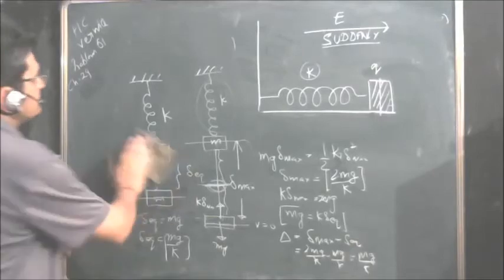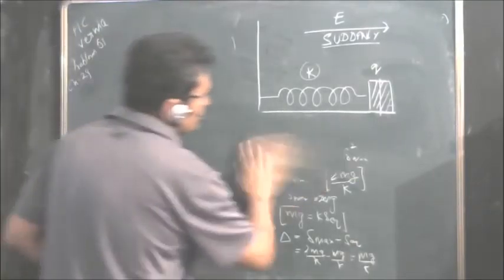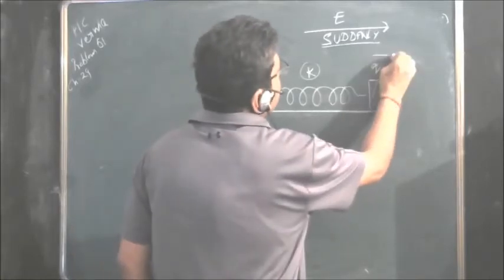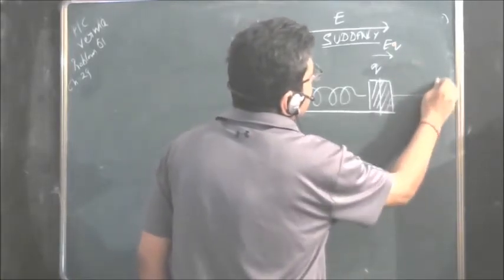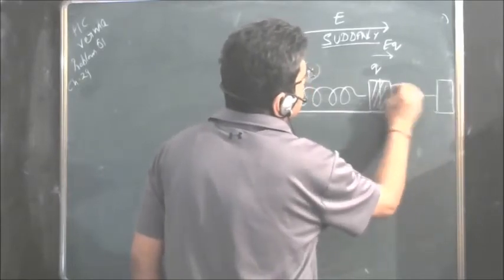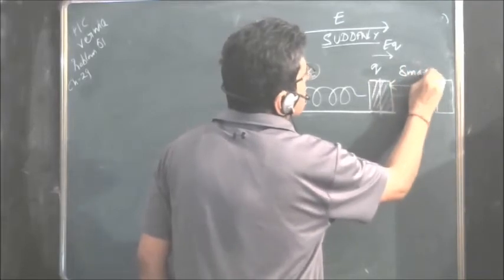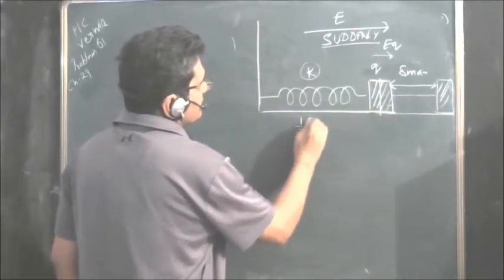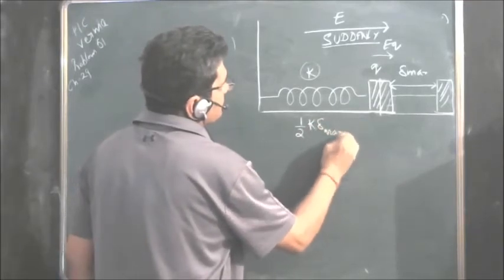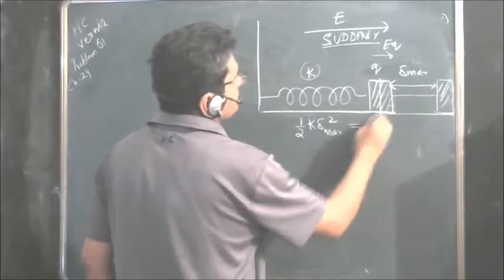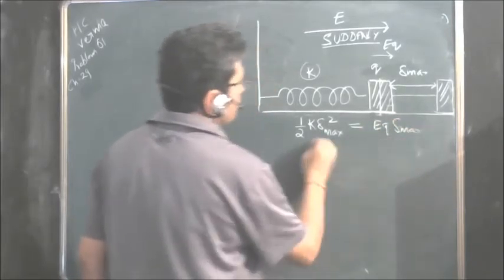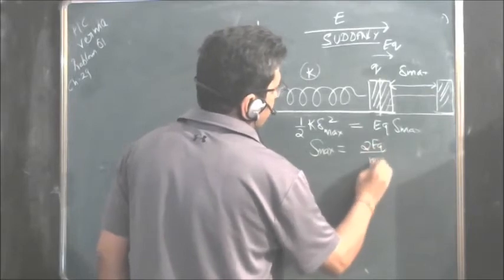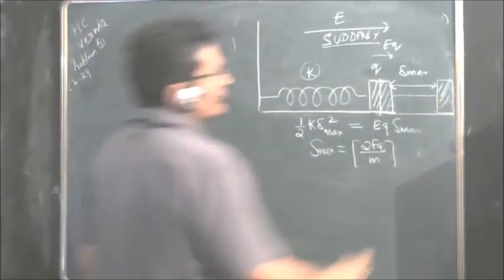Now for the electric field case: when the electric field is suddenly switched on, the force EQ acts on the mass. This force does work, causing a maximum extension delta maximum. By energy conservation, half K delta maximum squared equals EQ times delta maximum, giving delta maximum equal to 2EQ upon K.